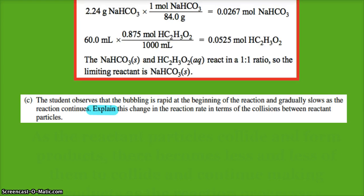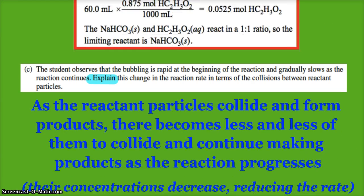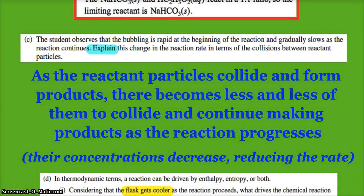The more products get made, the less reactive molecules there are left. So there'll be less collisions, so the reaction will slow down. That's all we're looking for here: as the reactant particles collide and form products, there's less and less of them to collide. In other terms, the concentration of the reactant particles decrease, which thus reduces the rate.